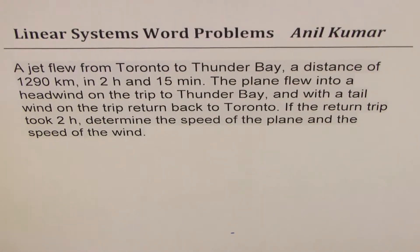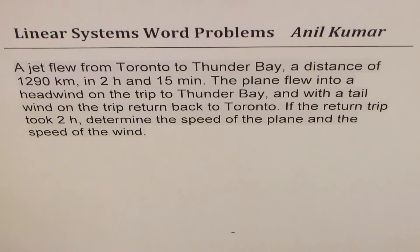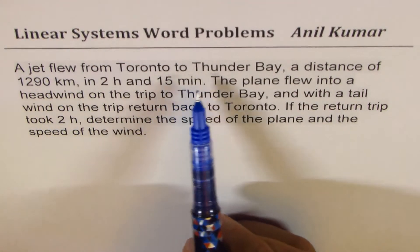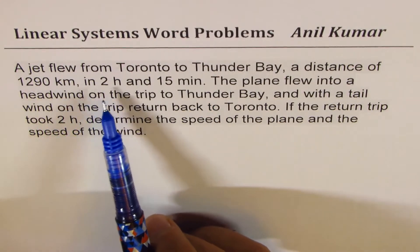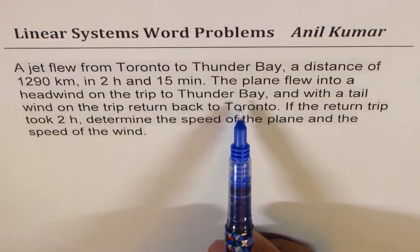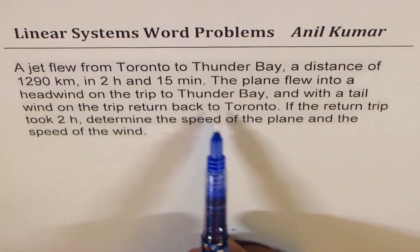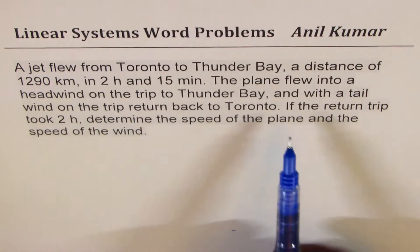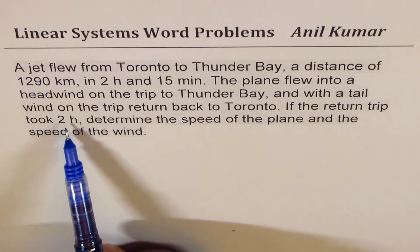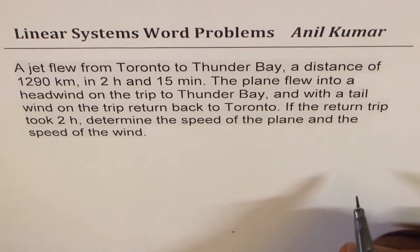I'm Anil Kumar sharing with you questions on linear systems. In this set of videos you'll find questions relating to numbers, percentage, and now distance, speed, and time. The question here is: a jet flew from Toronto to Thunder Bay, a distance of 1290 kilometers, in two hours and 15 minutes. The plane flew into a headwind on the trip to Thunder Bay — that means against the wind — and with a tailwind on the return trip back to Toronto. If the return trip took two hours, determine the speed of the plane and the speed of the wind.